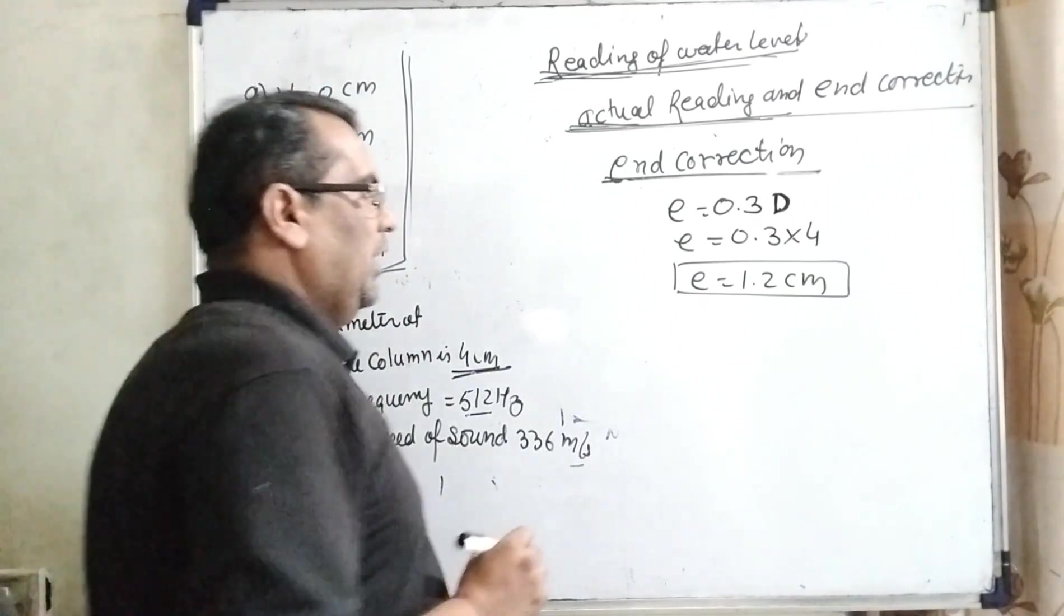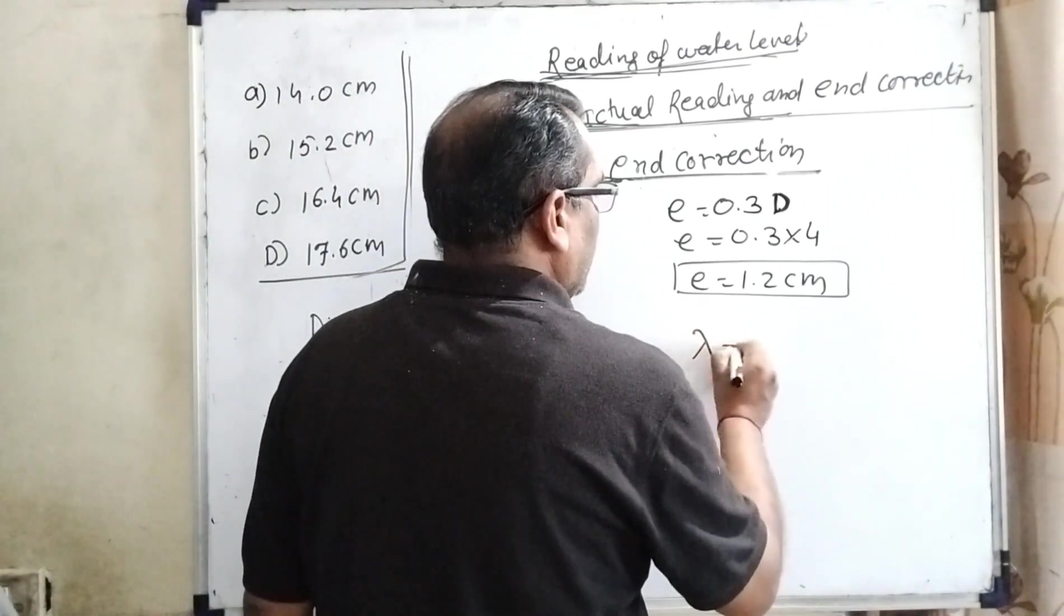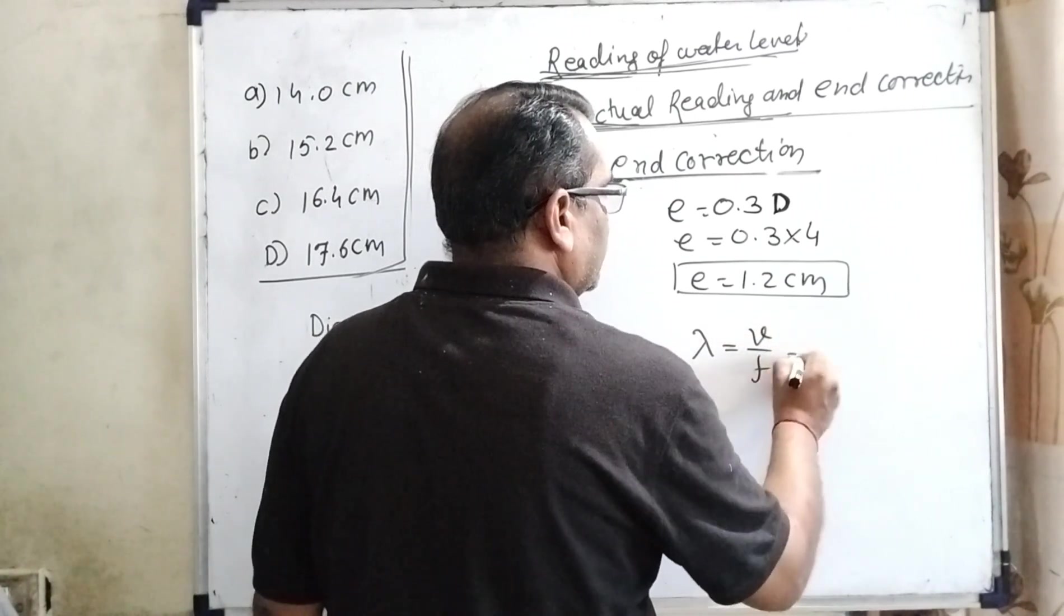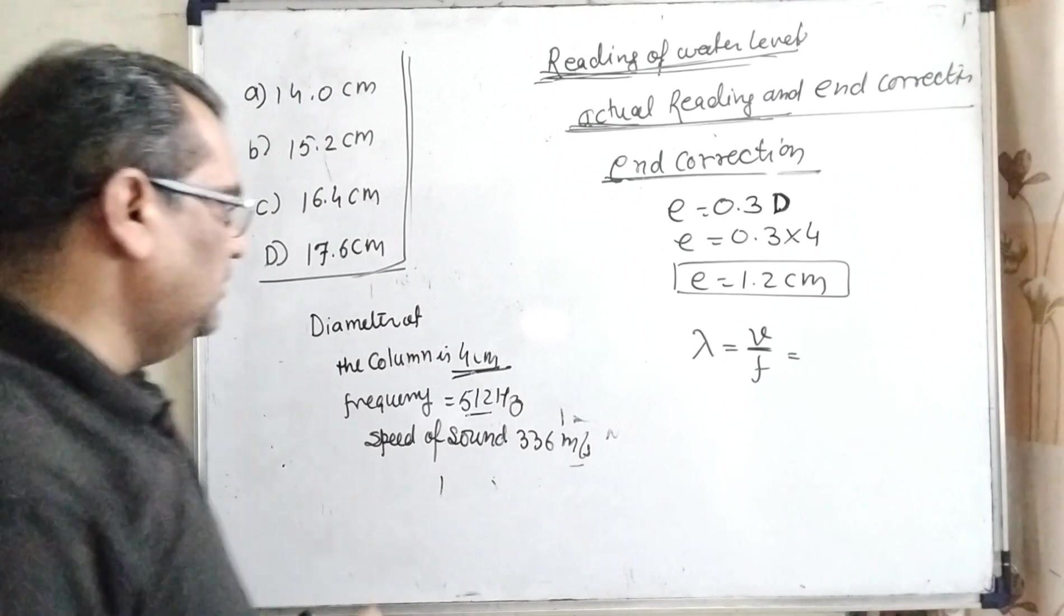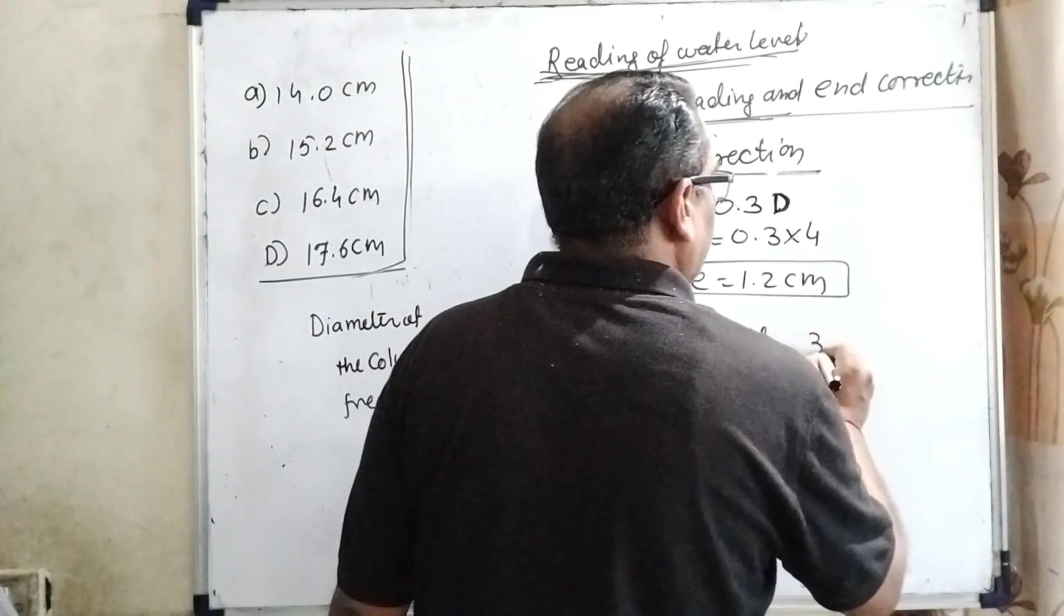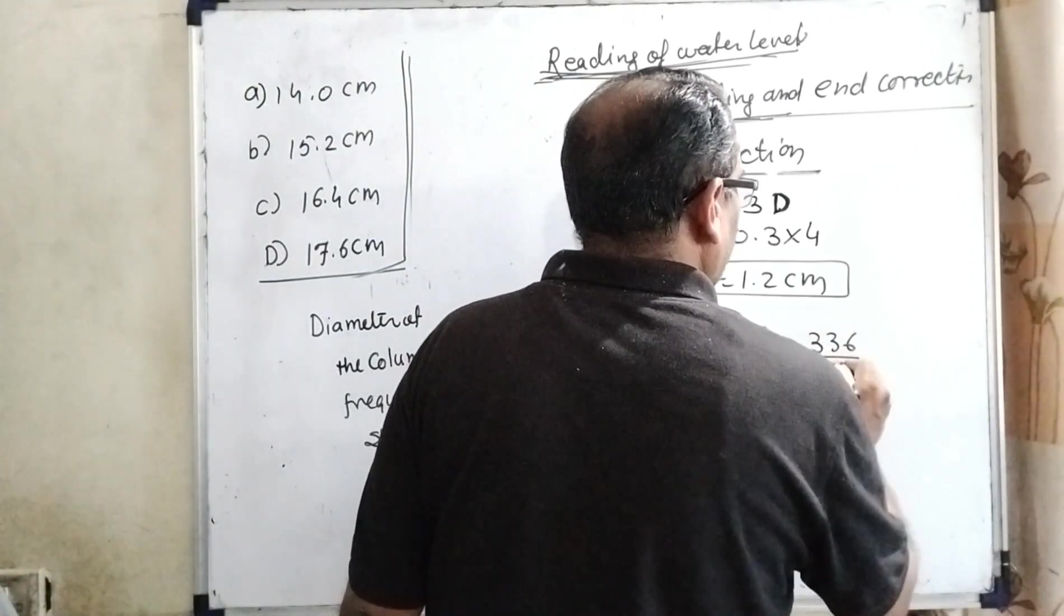Now, we know that lambda equals speed of sound divided by frequency, v upon f. Here, the speed of sound is 336 meters per second as given, and frequency is given as 512.